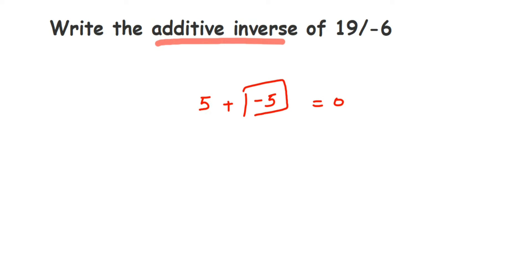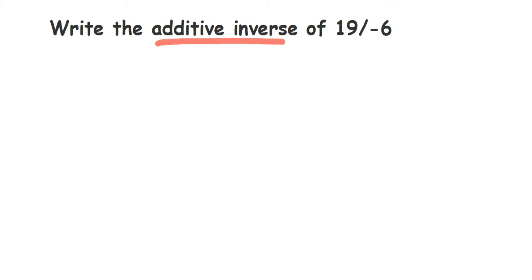It's very simple — we got the same number but with a different sign. 5 was positive and we got negative. So to find the additive inverse of any number, it will be the same number but with the opposite sign. Minus 5 is the additive inverse of 5.